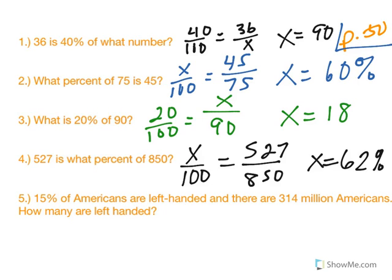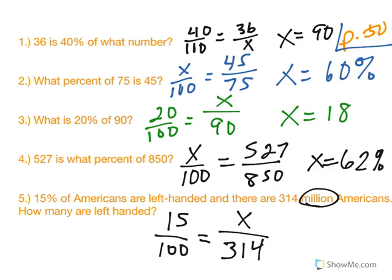Now when you look at number five, 15% of Americans are left handed. And there are 314 million Americans. How many are left handed? Well, when you see the percent, percent is automatically over 100. Now on the right side, the is and of doesn't really come in handy here. But part to whole. 314 million Americans. Is that all of them or some of them? It's all of them, so that goes on the bottom. Now, we're talking in millions. So when I cross multiply and solve, I come up with 47.1 and that is in millions. So 47.1 million Americans are left handed. So that is page 50.